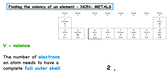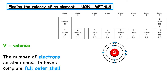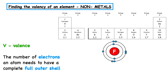Elements in Group 6, such as Oxygen, which has the electron arrangement 2-6, needs to gain two electrons to achieve stability. So elements found in Group 6 of the periodic table have a valency of two. Group 7 elements, such as Fluorine, which has the electron arrangement 2-7, need to gain one electron to achieve stability. So elements found in Group 7 of the periodic table have a valency of one.